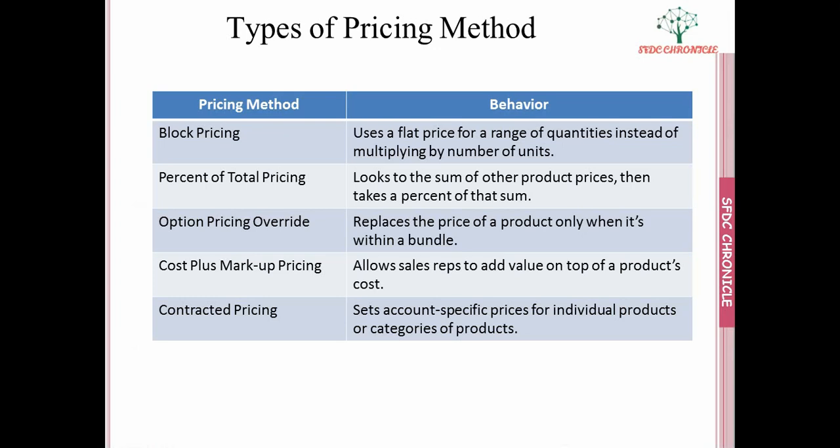The fifth pricing method is contracted pricing. Suppose I have two customers, customer A and customer B. I deal with customer A more than customer B, so I want customer A to get more discount or a lower price whenever I sell something to them. To ensure only customer A gets that benefit, we use contracted pricing.